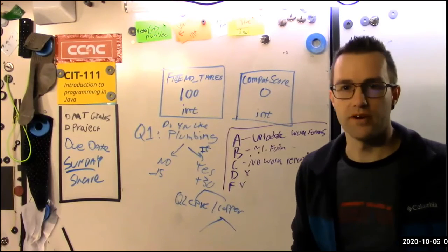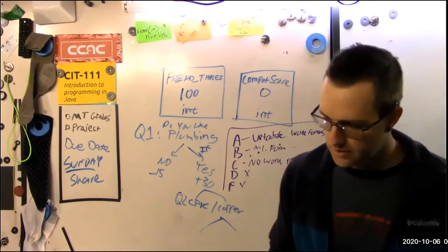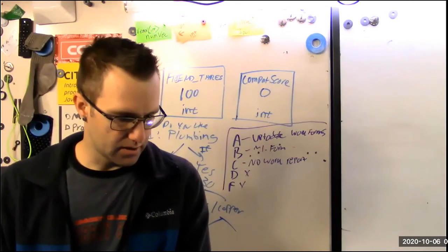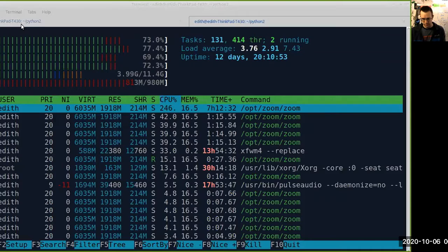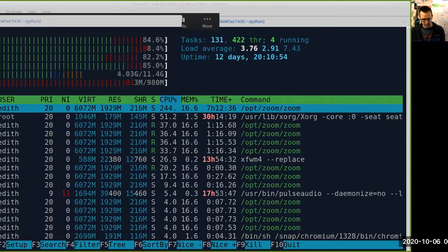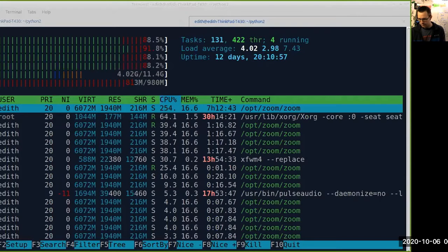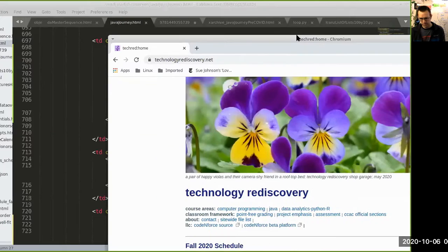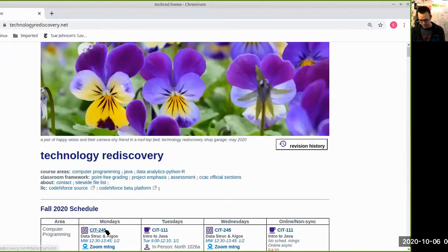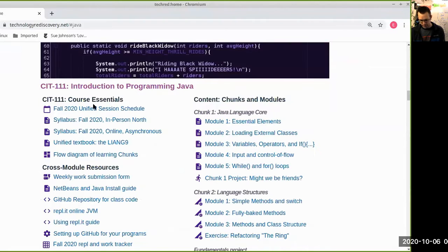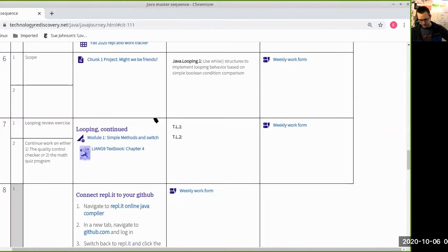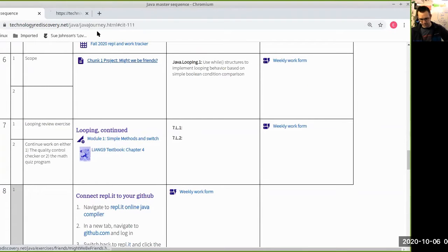You can be as creative as you want. So I posted the link to the project summary page already on the schedule. And so that is located in the familiar place. Close my windows. One sec. Stand by. Here's homepage. Here's our Java journey. Session schedule. And so week five is the chunk one project, Might We Be Friends?